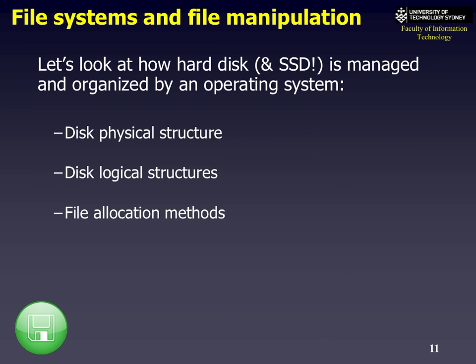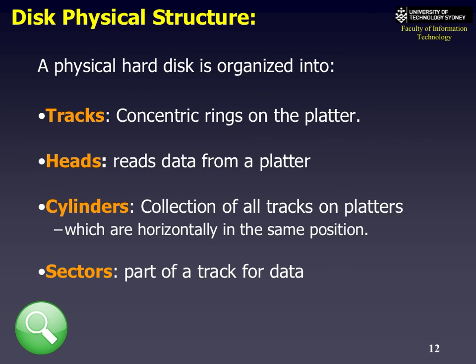Obviously a hard drive and a solid state drive look different — the current state of the art is called M.2. Let's take a look at these actual physical disks. Physically a disk does have a presence — it's physical, it's got certain structures inside it, and you allocate files on it in a certain way. We'll talk about these separately: our disk infrastructure, our logical structure, and our file allocation. Physically, the old hard disks are organized into things called tracks, heads, cylinders, and sectors.